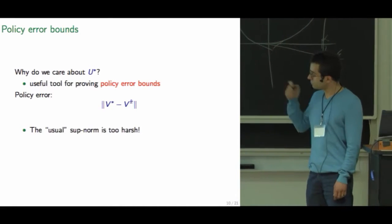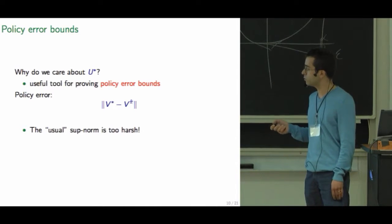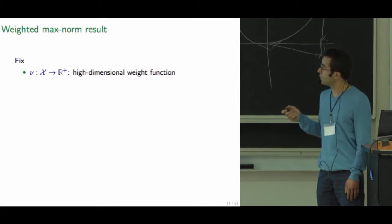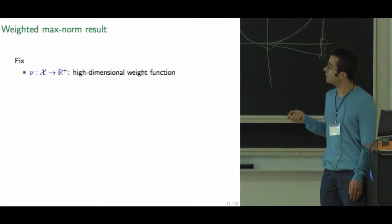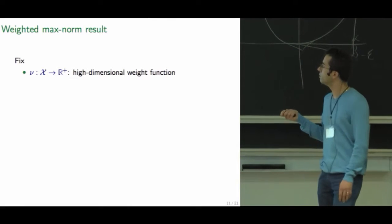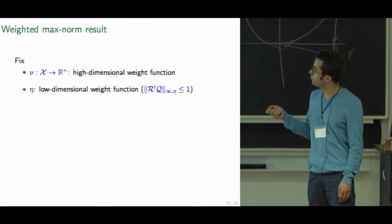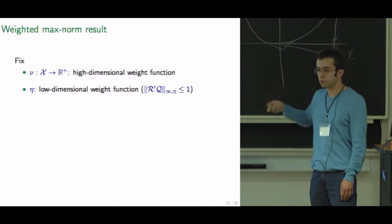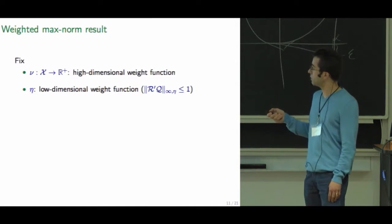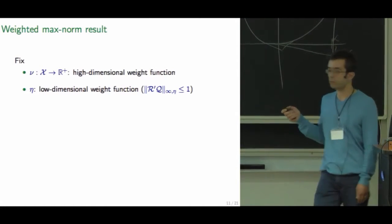And people have used, actually it's very easy to get bounds in some specific settings with the supremum norm, but it's too harsh. So we're going to use other norms. One alternative, a good alternative is the weighted supremum norm, which allows us to consider errors at different regions of the space with different importance. We're going to take nu to be this weight function for the high dimensional norm on the high dimensional space. Eta will be the weight function for the norm on the low dimensional space.